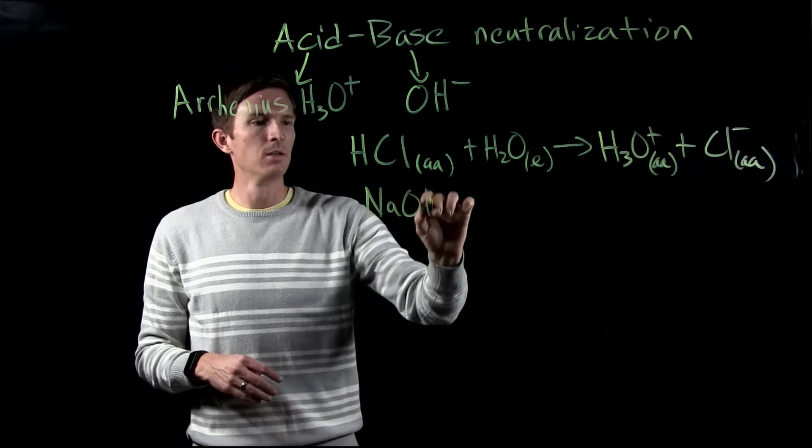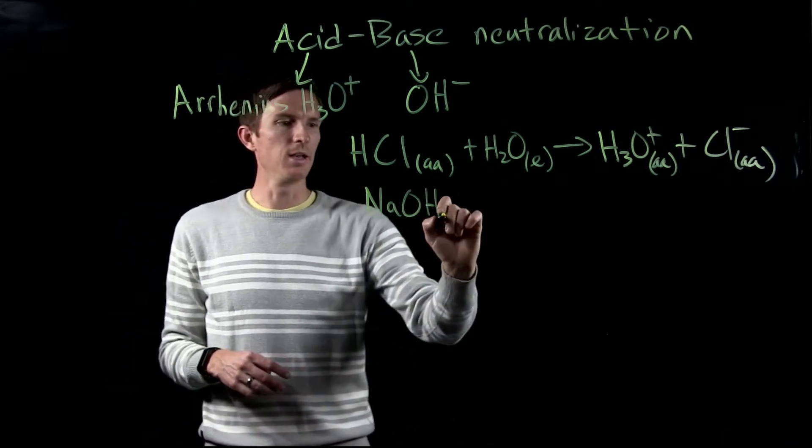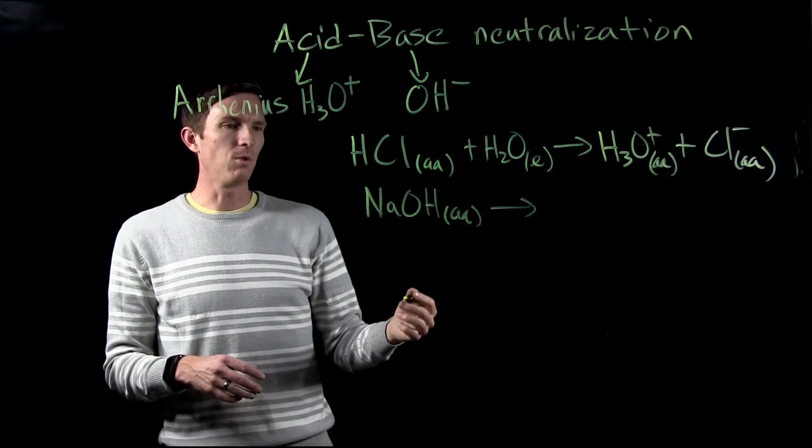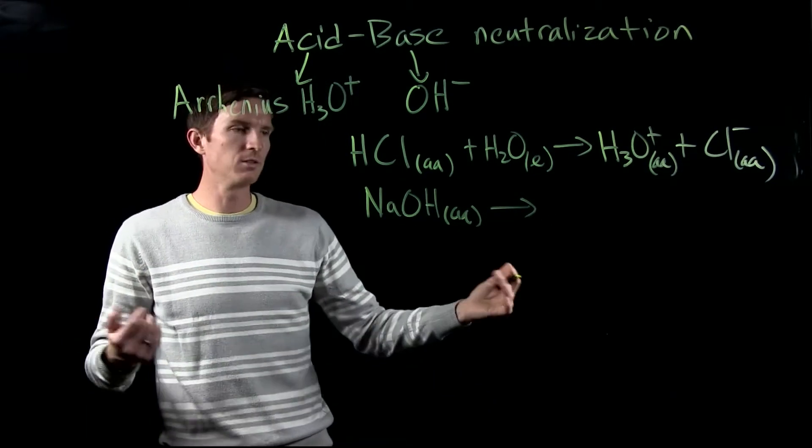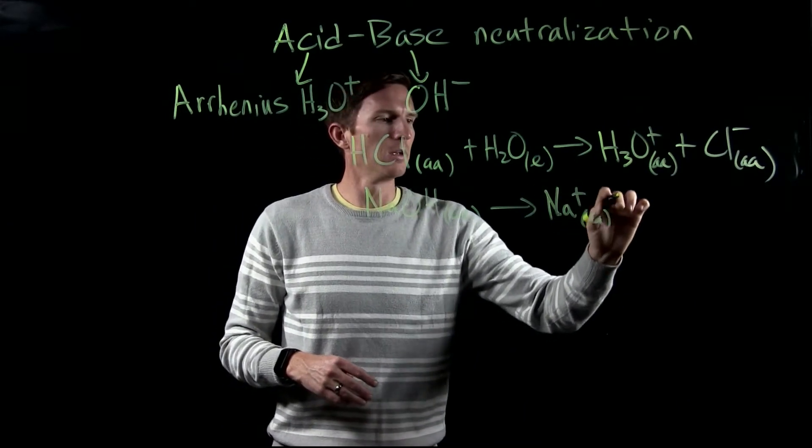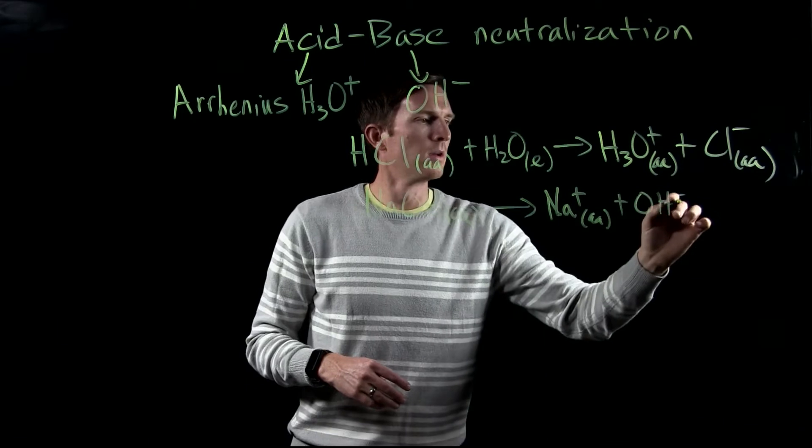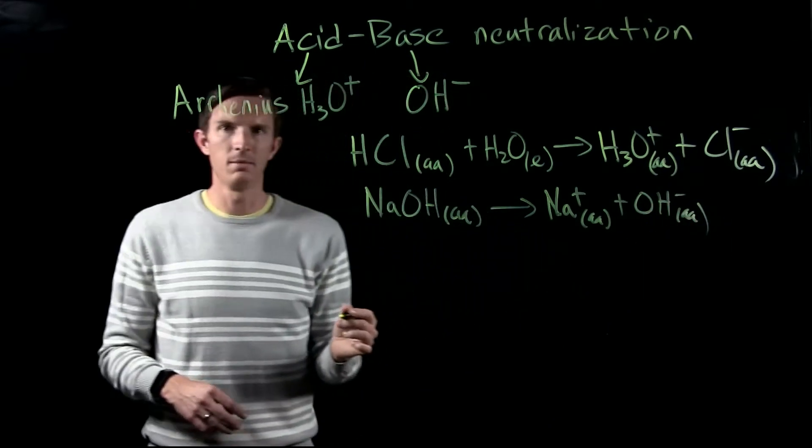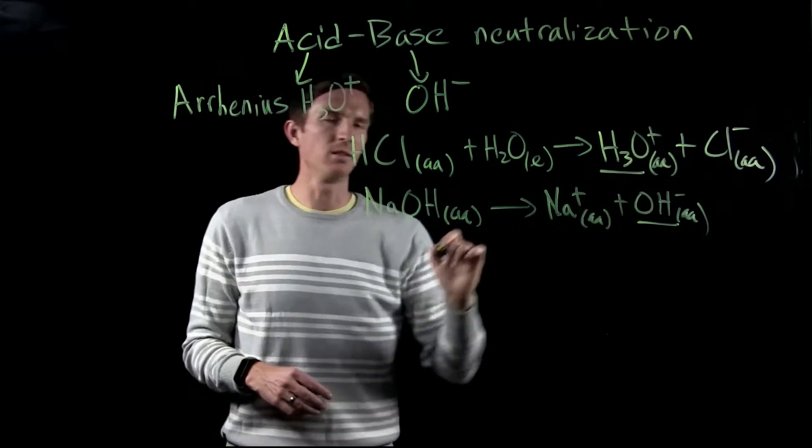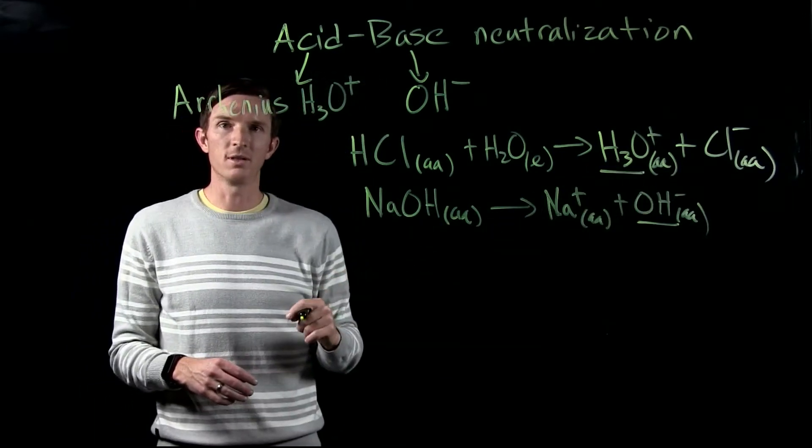Now then maybe we have something like sodium hydroxide, so NaOH. Well when that's dissolved and added into water, it dissociates, undergoes a dissociation reaction, to give us the sodium ion and the hydroxide ion. So again, base forms the hydroxide ion, acid forms the hydronium H3O plus ion.